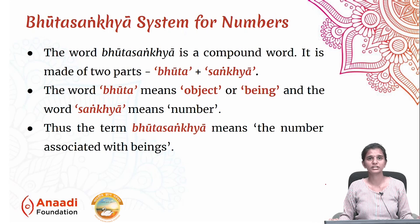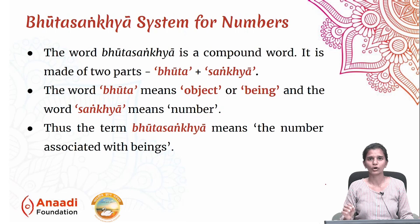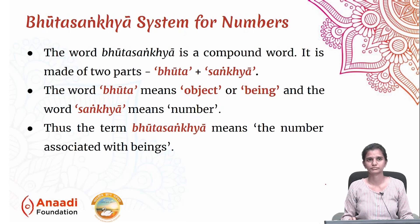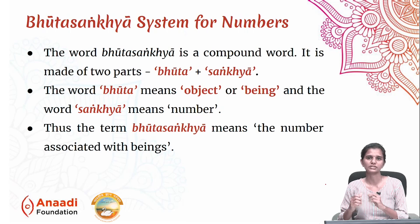The word Bhouta Sankhya is a compound word made of two words: Bhouta and Sankhya. The word Bhouta means object or being, and the word Sankhya means number. So, Bhouta Sankhya means the number that is associated with beings.